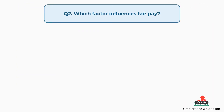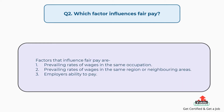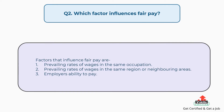Question number two: Which factor influences fair pay? The answer is, factors that influence fair pay are: prevailing rates of wages in the same occupation, prevailing rates of wages in the same region or neighboring areas, and employer's ability to pay.